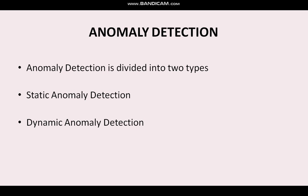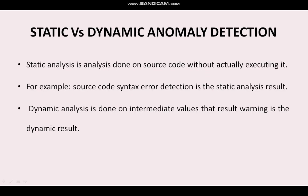Anomaly detection can be done in two types: number one is static anomaly detection, and number two is dynamic anomaly detection. Static anomaly detection can be done at compile time, and dynamic anomaly detection can be done at run time. What is the difference between static versus dynamic anomaly detection — we are going to see now.